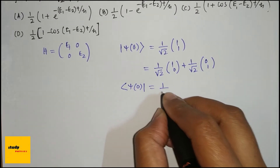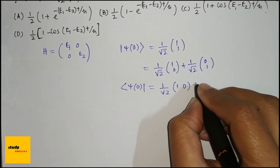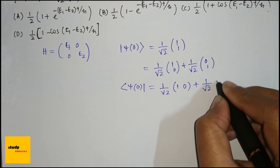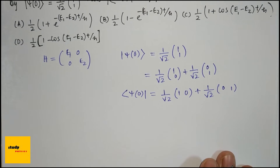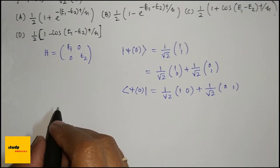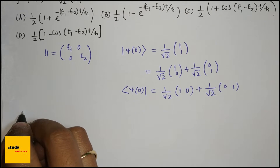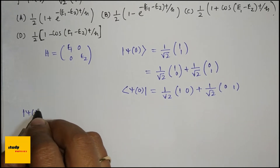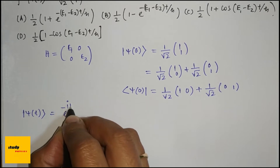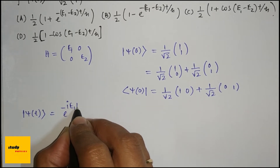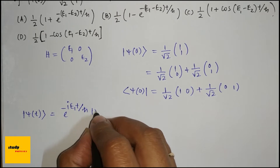The bra form psi of 0 is 1 divided by root 2 times (1, 0) plus 1 divided by root 2 times (0, 1). After time t, we can write psi of t as e to the power minus i E1 t divided by h-bar times psi of 0.